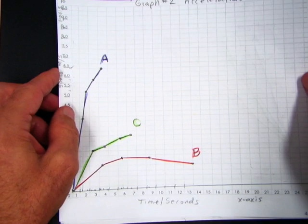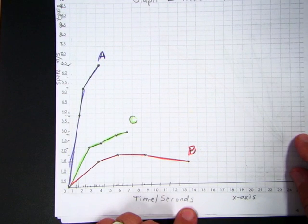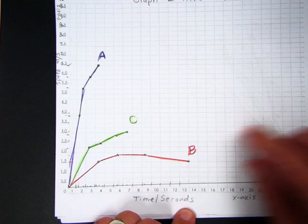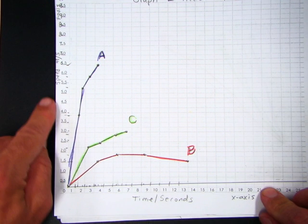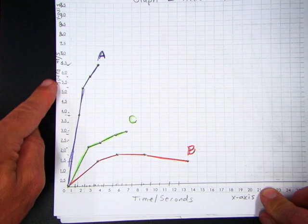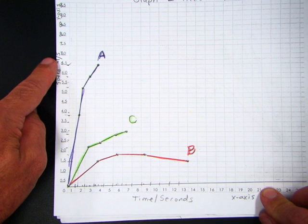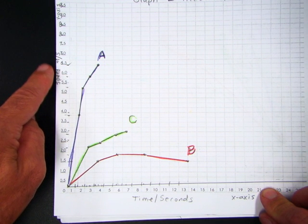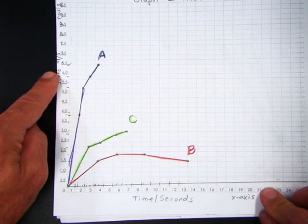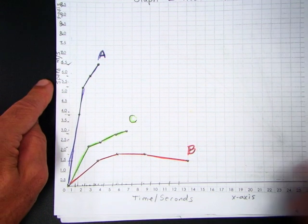Notice with the acceleration graph, it has time also on the bottom in seconds. But it has speed on the y axis in meters per second. So we always know if it has speed on this side, the y axis, it's going to have to be an acceleration graph.